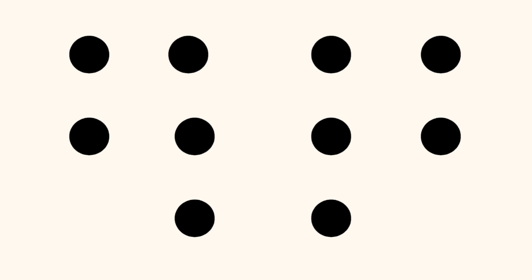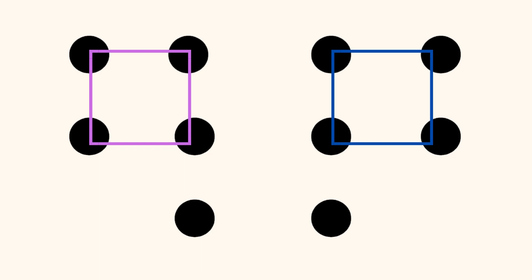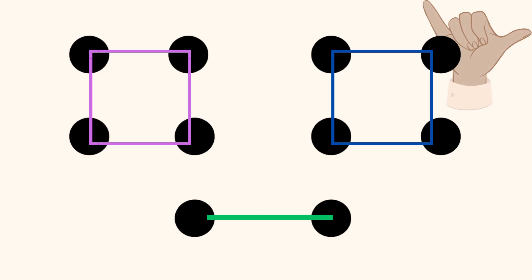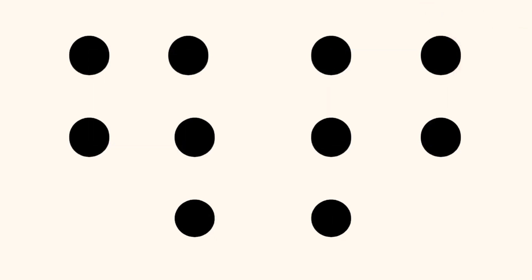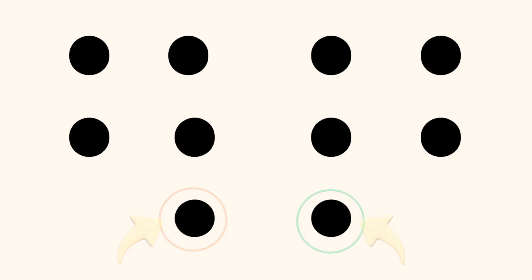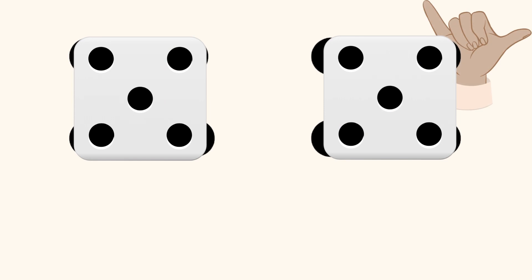Or did you see four dots in the shape of a square on the right, four dots in the shape of a square on the left, and two dots in a horizontal line on the bottom? You know that two groups of four equals eight, plus two more equals ten. Or maybe you mentally moved the two dots on the bottom to the center of both squares to make the pattern of five on the face of a die, and you know that five plus five equals ten.